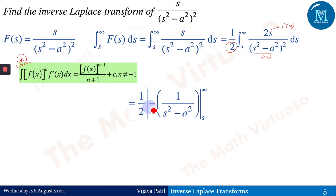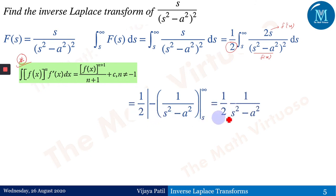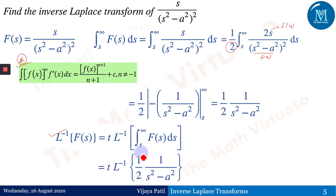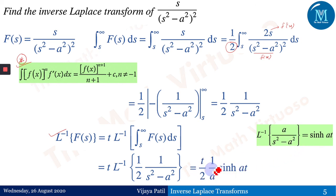Using the same formula, with f(x) = s²−a², f'(x) = 2s, and n = −2: the integral from s to infinity gives 1/2 · 1/(s²−a²). Applying the integration of transforms formula, the Laplace inverse of 2s/(s²−a²)² equals t · L⁻¹{1/2 · 1/(s²−a²)} = t · (1/2) · sinh(at)/a = t·sinh(at)/(2a).